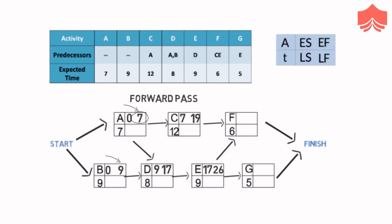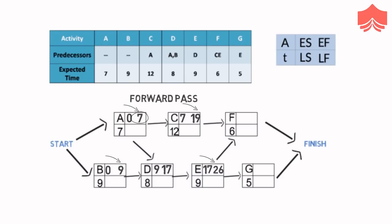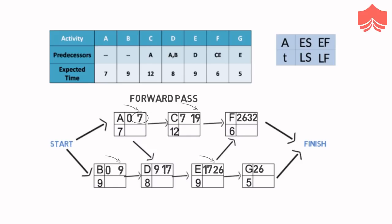F needs E and C to finish first. Both of them will not finish before 26, as E has the earliest finish at 26. Therefore F can start at the earliest at 26, and finish at 32 after consuming its 6 days. G only has one predecessor, E, and E will finish on 26, therefore G can start at the earliest at 26 and finish at the earliest at 26 plus 5 equals 31. As we can see, the last activity to finish is F, which will finish on day 32, therefore the project will take 32 days.